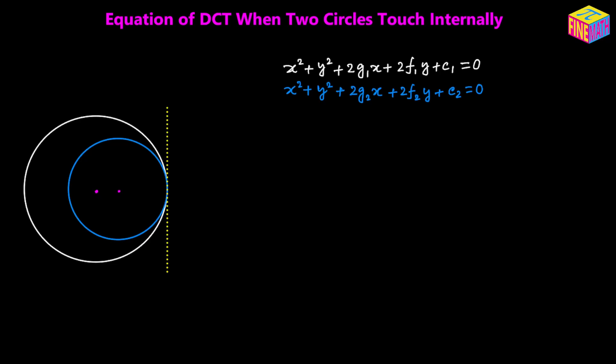Next we are going to see what would be the equation of this tangent and also how to find the coordinates of the point of contact. For that I have to do a little bit of construction — I am going to join the two centers and extend it all the way to the boundary of the circle and then name the important points. Let's suppose the center of the bigger circle is P, the center of the smaller circle is Q, and D is the point of contact of both the circles as well as the common tangent.